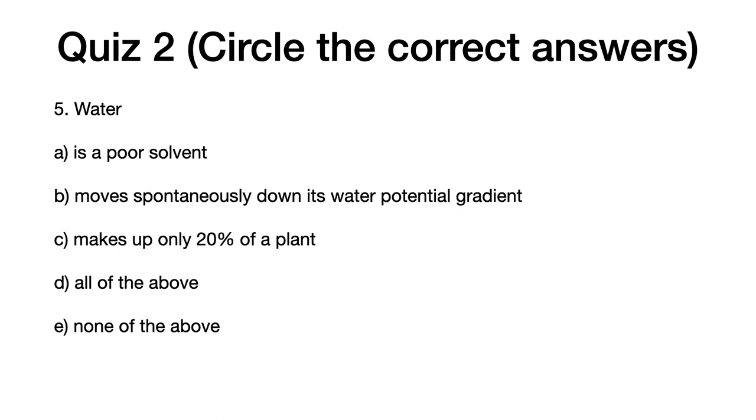Five, water, A, is a poor solvent. B. Moves spontaneously down its water potential gradient. C. Makes up only 20% of a plant. D. All of the above. E. None of the above.